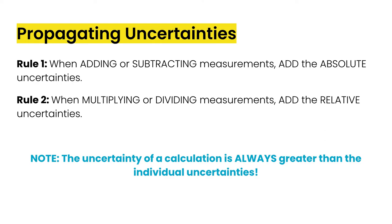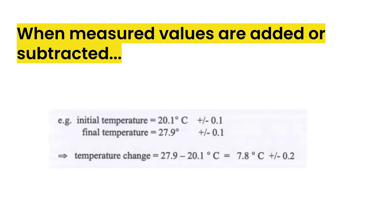Let's take a look at two quick examples then of how this works. So first off, when we've got measured values that are added or subtracted. So in this example, we have an initial temperature, and we have a final temperature. And we're trying to find the temperature change between 27.9 and 20.1 degrees Celsius. So we are subtracting values here.